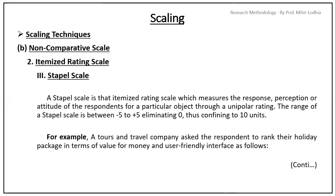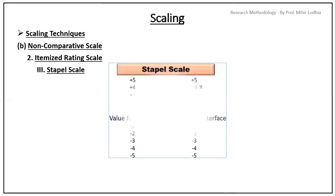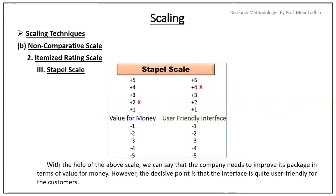Let's take the example. A tour and travel company asked the respondents to rank their holiday package in terms of value for money and user-friendly interface as follows. You can see on your screen, customer has marked their responses against the value for money and user-friendly interface from minus 5 to plus 5. With the help of the above scale, we can say that the company needs to improve its package in terms of the value of money. The decisive point is that the interface is quite user-friendly for the customers.